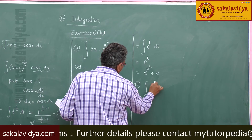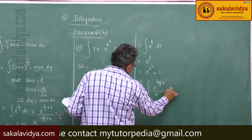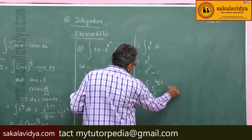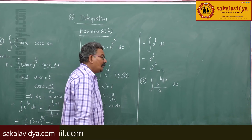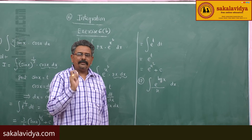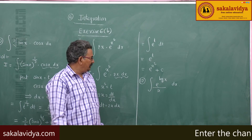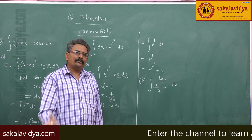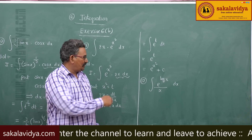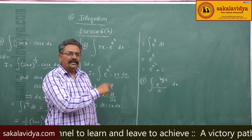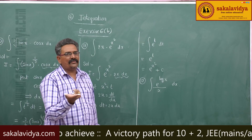Twelfth problem: evaluate integral of e to the power log x divided by x dx. Let us ask ourselves: what is the value of e to the power log x? From logarithms, e to the power log x is nothing but x. So, x by x cancels, giving integral of 1 dx. Since 1 is the derivative of x, integral of dx is x.